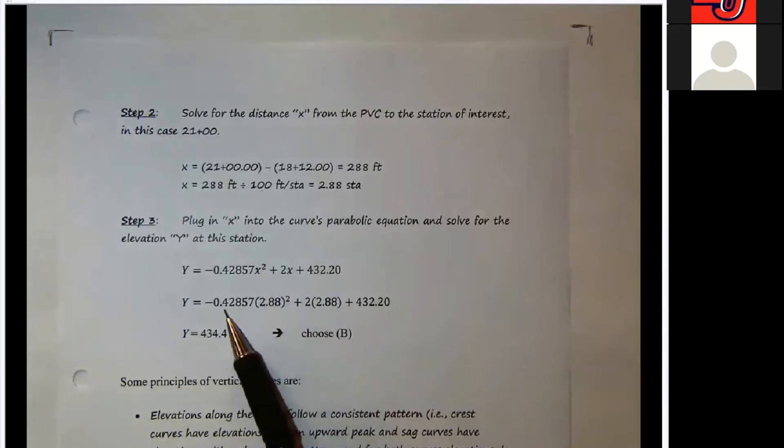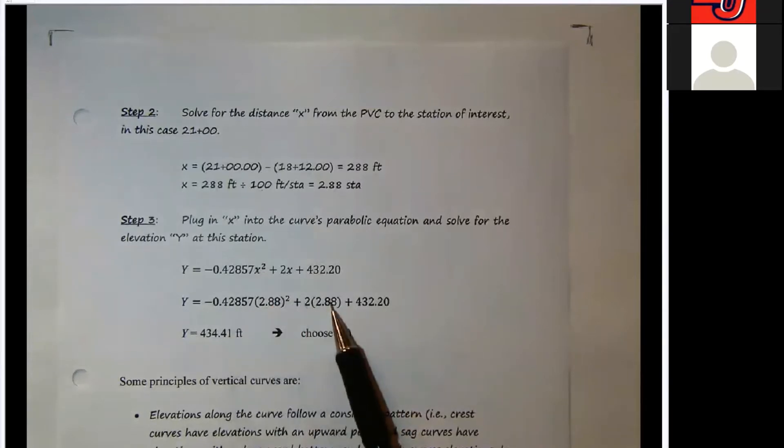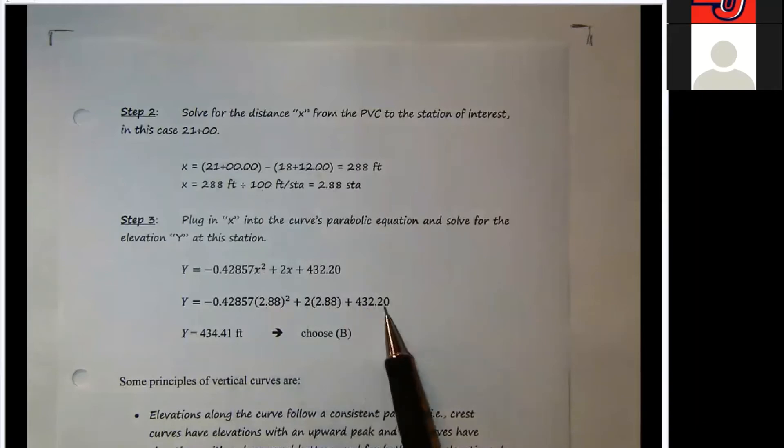Then plug that into the parabolic equation for x. So you're going to square that, multiply it by the coefficient a, plus two times the 2.88, plus our PVC elevation. And we end up with 434.41.